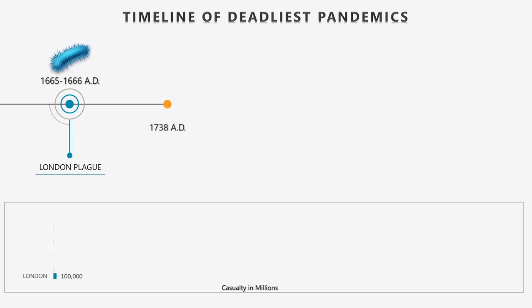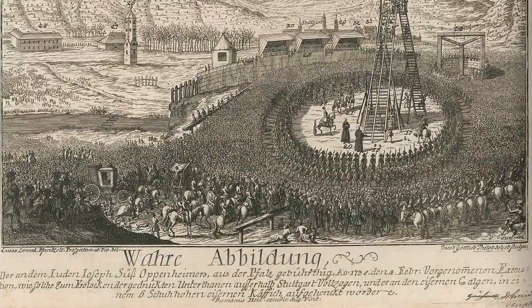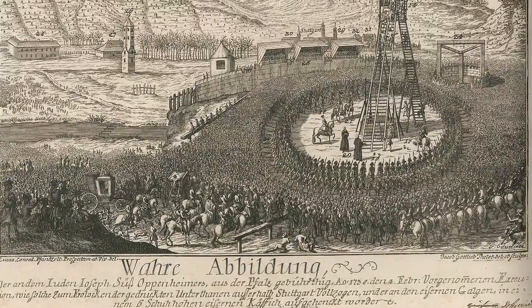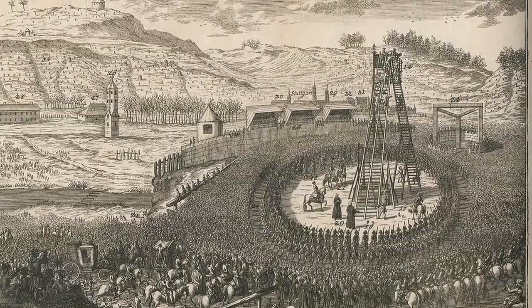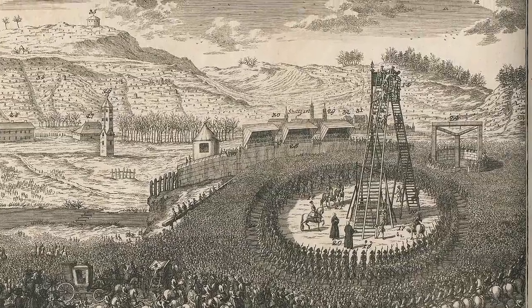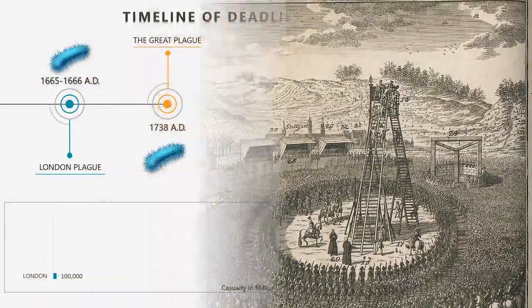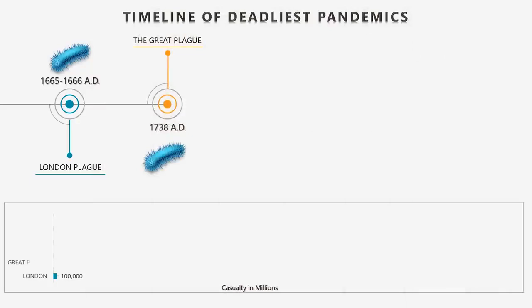At number 14: The Great Plague of 1738. This was an outbreak of bubonic plague between 1738 to 1740 that affected areas in the modern nations of Romania, Hungary, Ukraine, Serbia, Croatia, and Austria. Although no exact figure is available, the epidemic likely killed over 50,000 people.